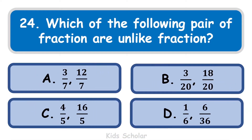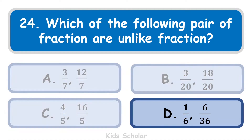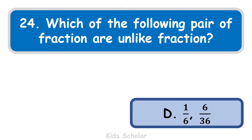Next question is: which of the following pairs of fractions are unlike fractions? The options are: A) 3 by 7 and 12 by 7, B) 3 by 20 and 18 by 20, C) 4 by 5 and 16 by 5, D) 1 by 6 and 6 by 36. The correct answer is D — 1 by 6 and 6 by 36 — because both fractions have different denominators.